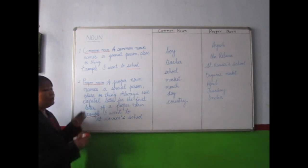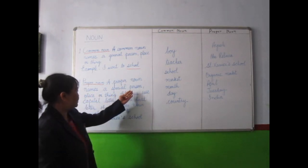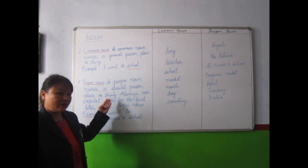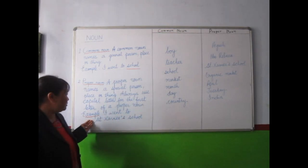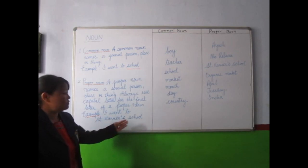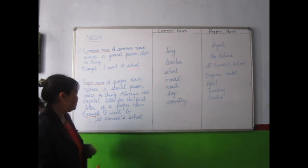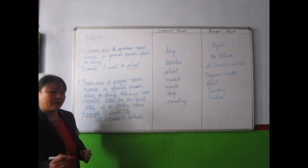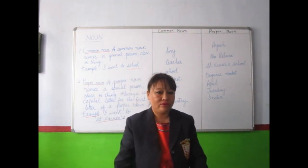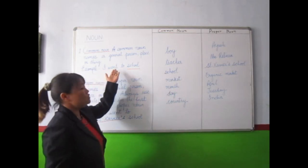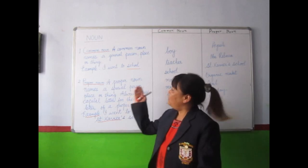And when we talk about proper noun — for example, I went to St. Xavier's School. So we talked about a particular place, that is St. Xavier's School, which is located in Pakkyon. When I say I went to school, it means any one of the schools. So common noun means a general person, place or thing, but proper noun means a special person, place or thing.